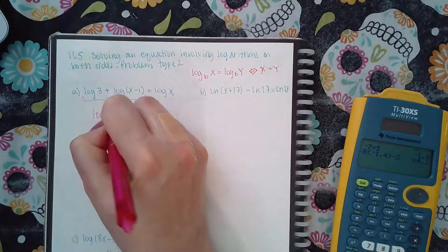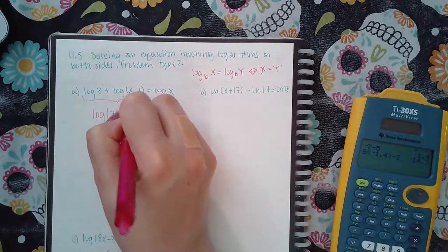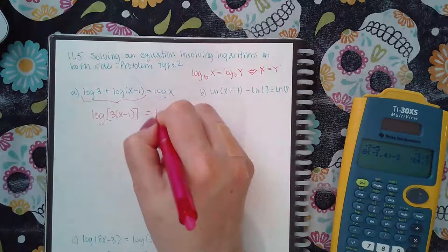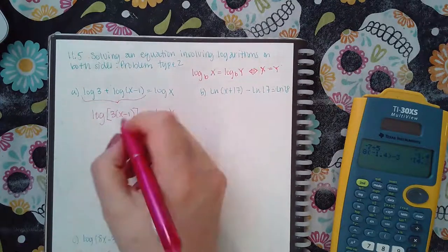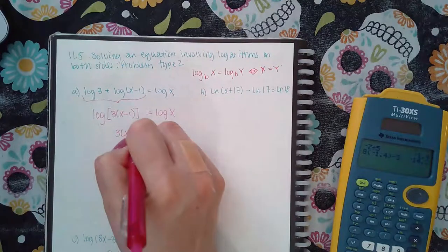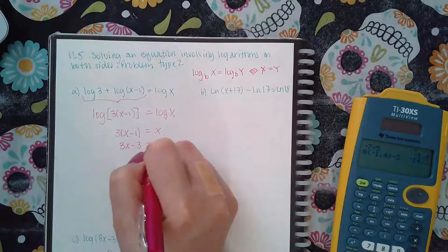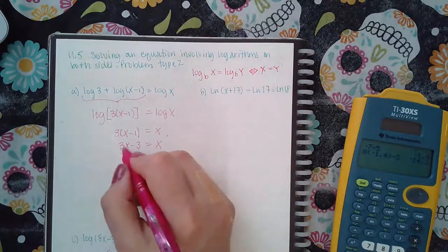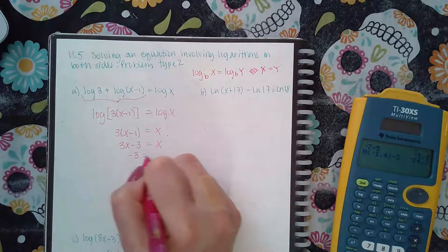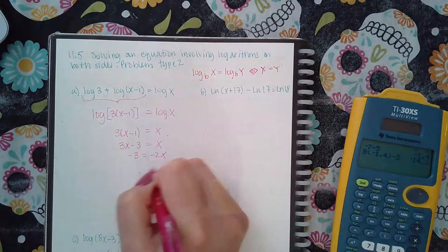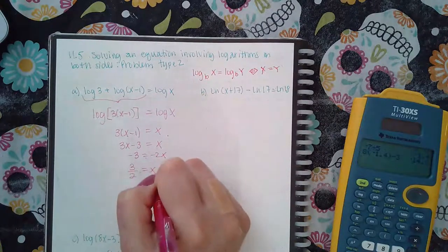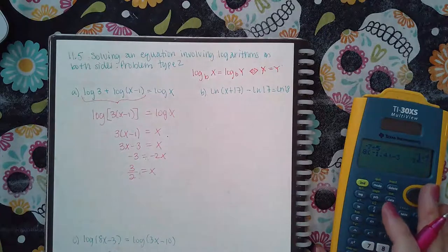We use our property, and when you add two logs together, it's the same as taking the product of their arguments. Then now for these two things to be equivalent, this argument would have to equal this argument. If I minus 3x over I get negative 2x, and then if I divide by negative 2 I get three halves equals x.